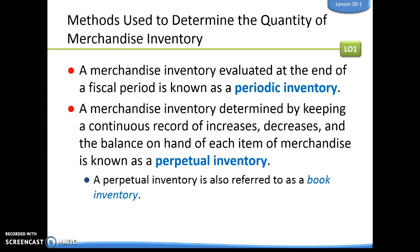Methods used to determine the quantity of merchandise inventory: we have two different methods. Periodic inventory is when merchandise is evaluated at the end of the fiscal period. Perpetual inventory is merchandise inventory determined by keeping a continuous record of increases, decreases, and the balance on hand. Perpetual inventory is sometimes referred to as book inventory because we're keeping track of it in a book. Periodic inventory is also called physical inventory because they will actually go out and physically count the inventory that is on hand.